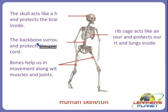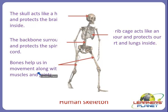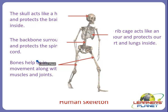The backbone surrounds and protects the spinal cord. Bones also help us in movement along with muscles and joints. These are the main organs present in the human skeleton, and we will now study each organ of this human skeleton in detail.